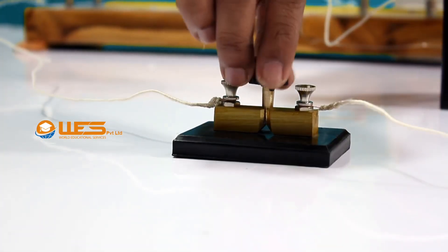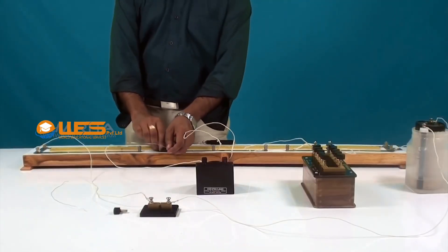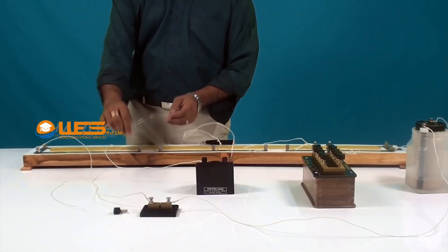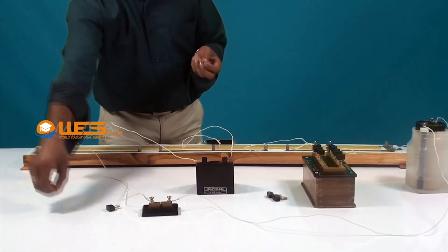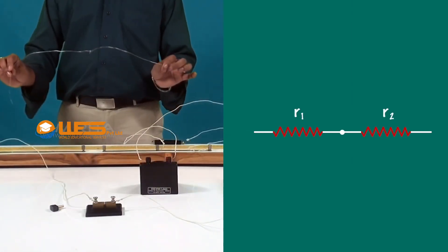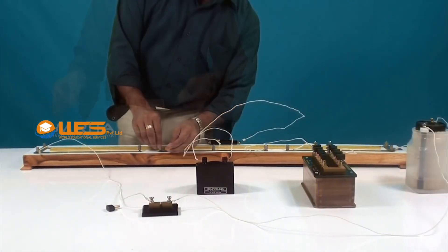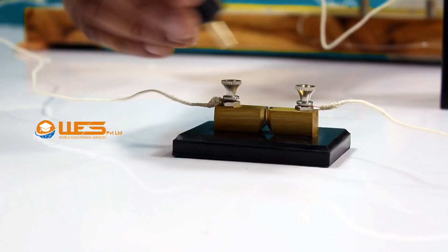After taking the values, remove the key and then resistance wire R2 from gap G2. Now, take the two resistance wires R1 and R2 and connect them in series by joining the wires together. Introduce this combination in gap G2 and insert the key.